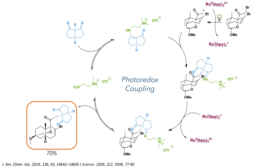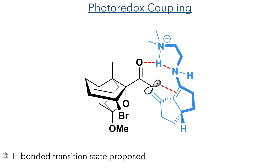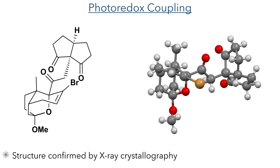This reaction formed a single isomer and it is proposed that the diamine forms a hydrogen-bonded transition state. We could propose that stereoselectivity is driven by steric hindrance, as the radical approaches from the same side of the molecule as the hydrogen, which is the smallest substituent. The stereochemistry of the product was determined by X-ray crystallography.